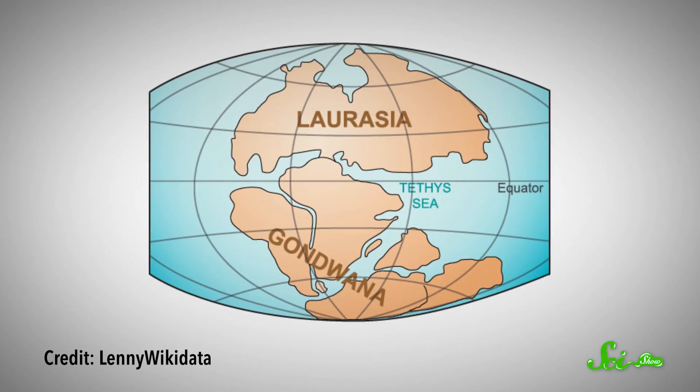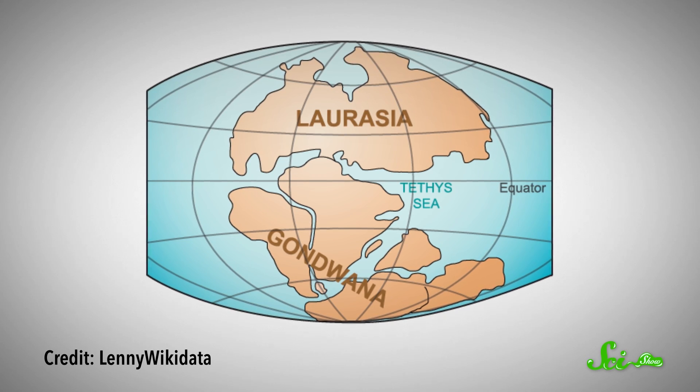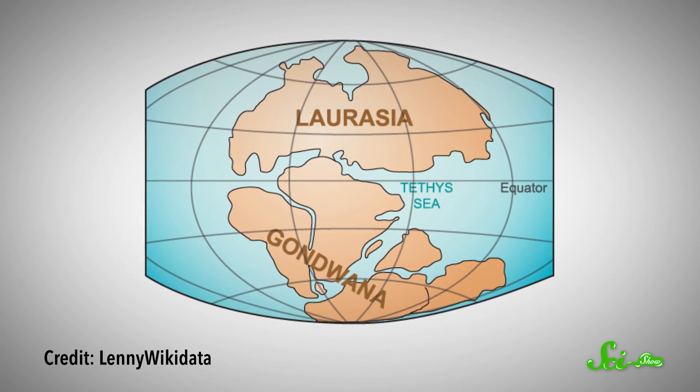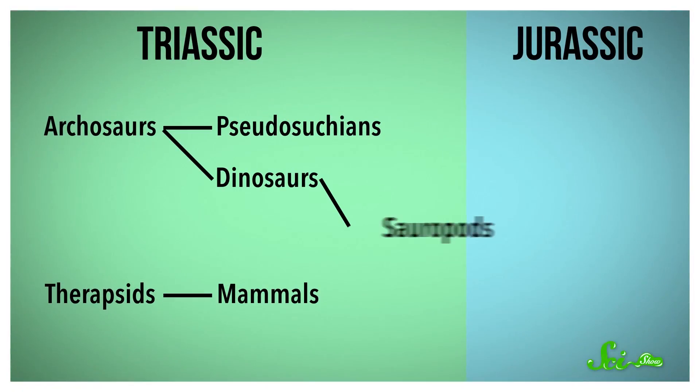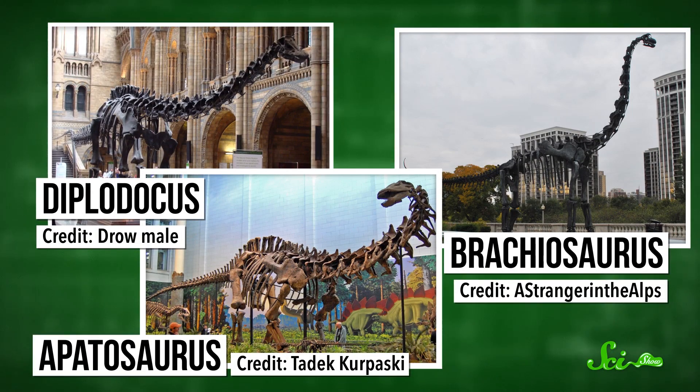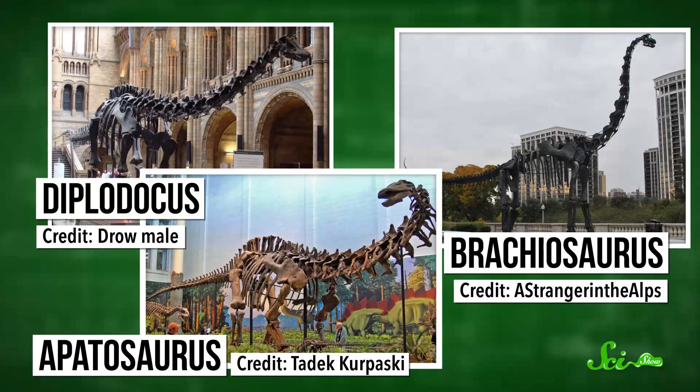I do feel like I need to point out that some of the dinosaurs from the movie franchise are partly or totally made up, and others aren't from the Jurassic at all. During the Jurassic, Pangaea was beginning to separate into two continents — Laurasia and Gondwana — and shallow seas covered parts of the land. This is when dinosaurs diversified into their more familiar forms. The Jurassic was a great time to be a sauropod — a huge, long-necked plant-eater that walked on four legs. Diplodocus, Brachiosaurus, and Apatosaurus all lived during the Jurassic.